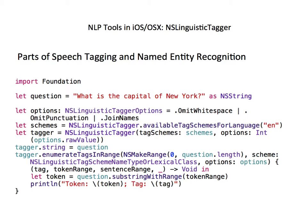The third option, joinNames, tells NSLinguisticTagger that when we use named entity recognition, we want to return matching entities as one token. In the question we're analyzing, this will ensure that 'New York' is treated as one token instead of two.